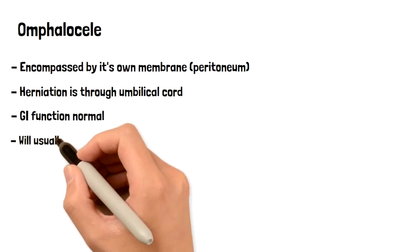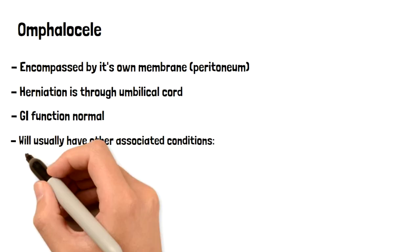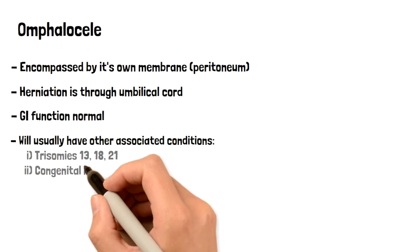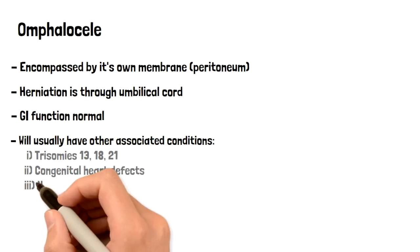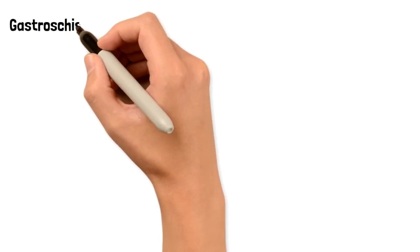And finally with this, it's usually associated with some other disorders and defects as well. So Down syndrome, trisomies 13 and 18, as well as congenital heart defects or neural tube defects. So when you have a patient who has this, they likely have one of those other things as well.